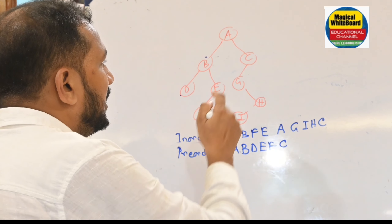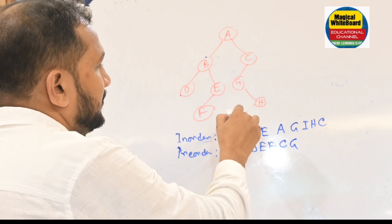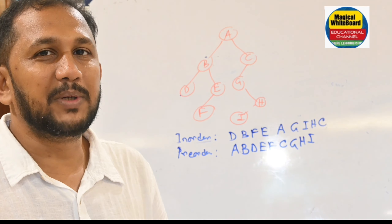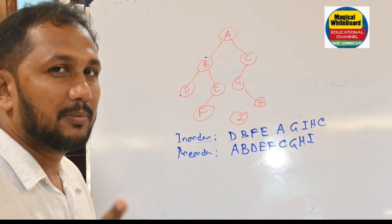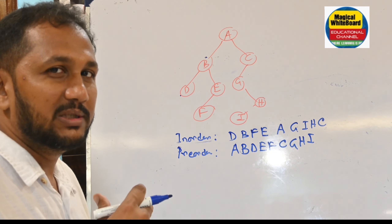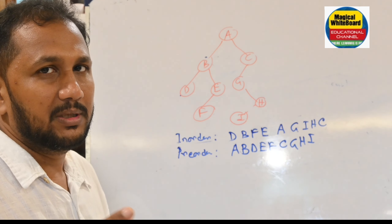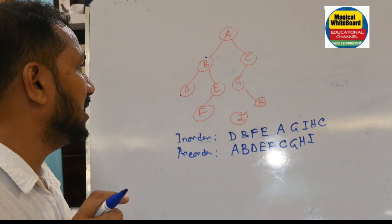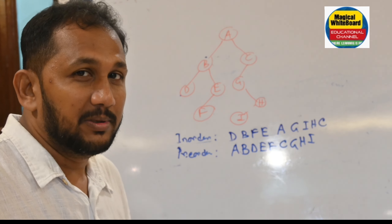Then go to the right subtree. From the right subtree, root is C, then go to the left node — root is G. There is no left subtree of G, then go to the right subtree — root is H, then left is I, and there is no right subtree. The pre-order traversal result is: A, B, D, E, F, C, G, H, I.